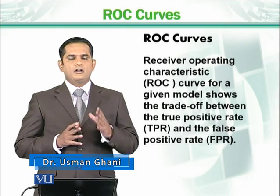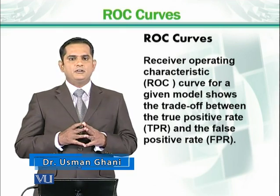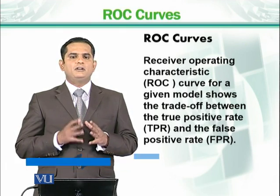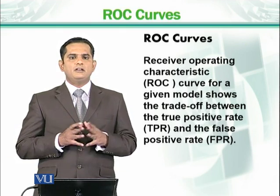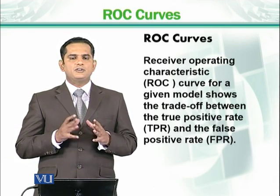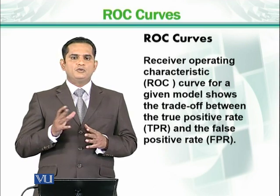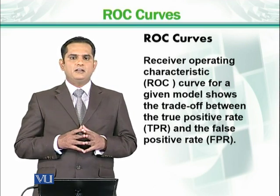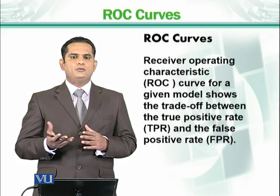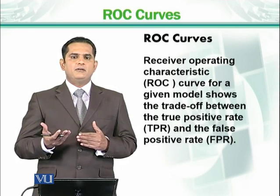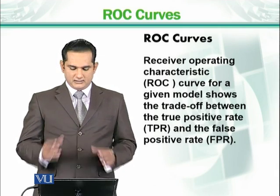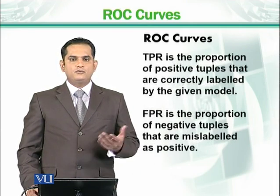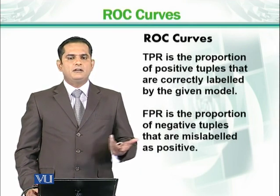We take false positive rate on the x-coordinate and true positive rate on the y-coordinate, and we explain the relationship between them. The diagonal line represents our initial guessing — true positive rate and false positive rate moving together. As we move above the diagonal, we get to our better results.